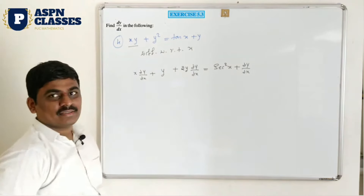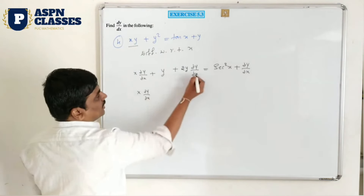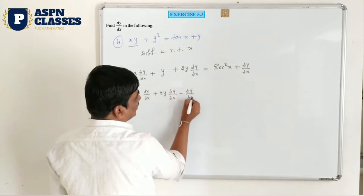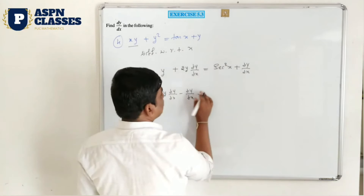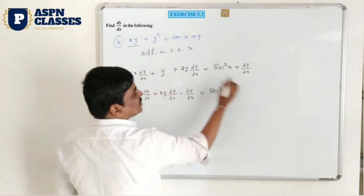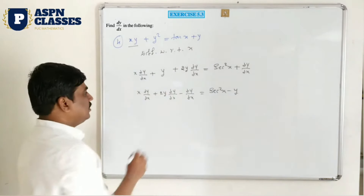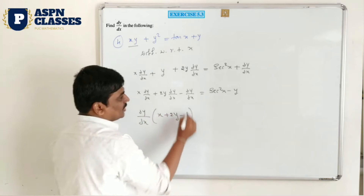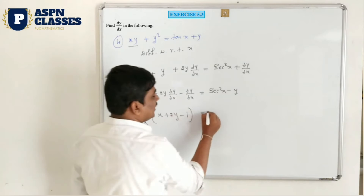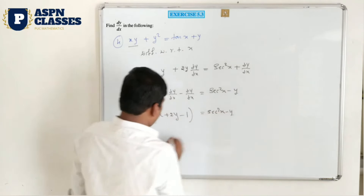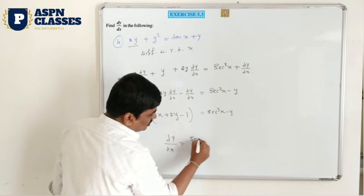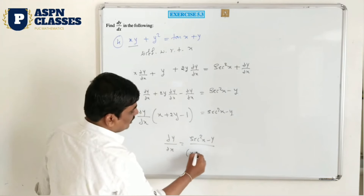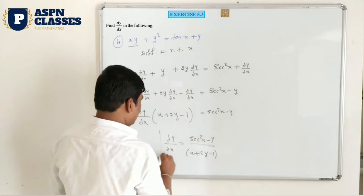Take all dy/dx to one side: x dy/dx, plus 2y dy/dx, minus dy/dx, and y shifted to this side means minus y, equals sec²x minus y. Take dy/dx as common factor — x plus 2y minus 1 remaining. Shift the bracket to this side as denominator. So dy/dx equals sec²x minus y divided by x plus 2y minus 1. This is your last answer.